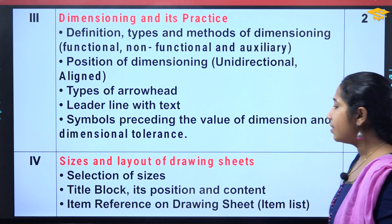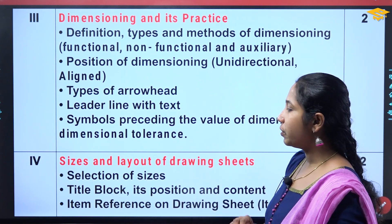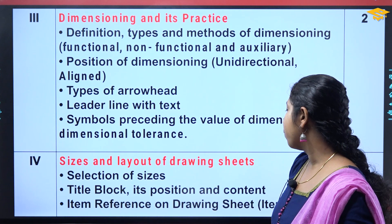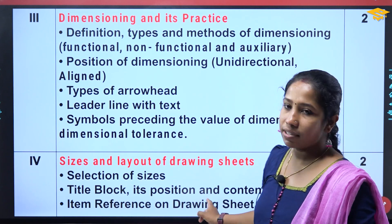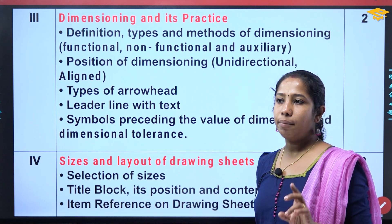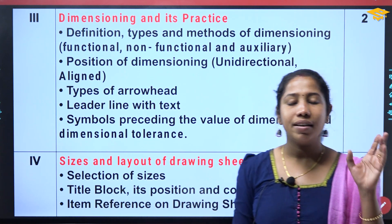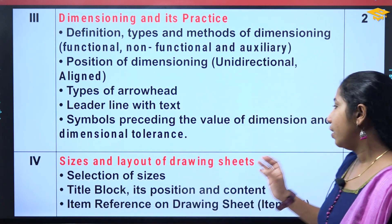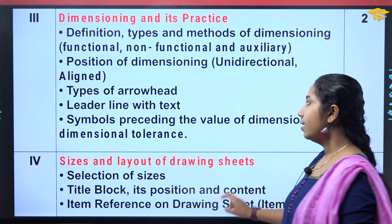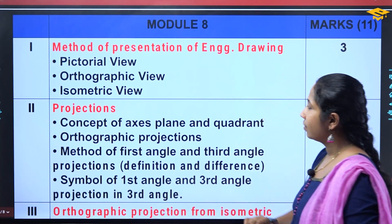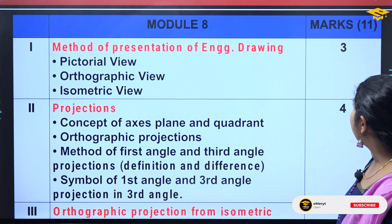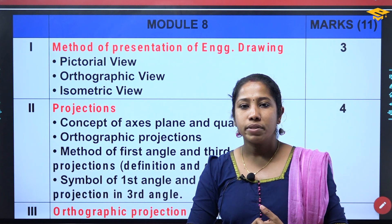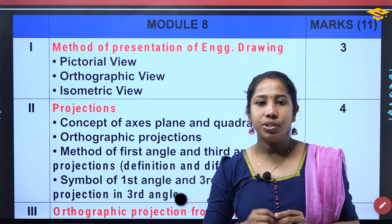The next one is Sizes and Layout of Drawing Sheets — selection of sizes, title block, position and content. Then item reference on drawing sheet and item list. Item list is very important because of drawing sheets done in the classroom. We will add 2 marks for this module. Module 8 carries 18 marks for machine drawing.